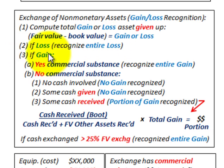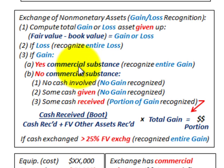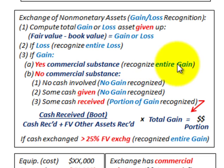Step three: if there is a gain, you have to determine if there's any commercial substance in the transaction. Commercial substance means the future cash flows change the economic position. If future cash flows affect the economics of this exchange, then yes, there is commercial substance, and you would recognize the entire gain. If there is no commercial substance — that is, you didn't satisfy the commercial substance requirement — then you have to look at three options.